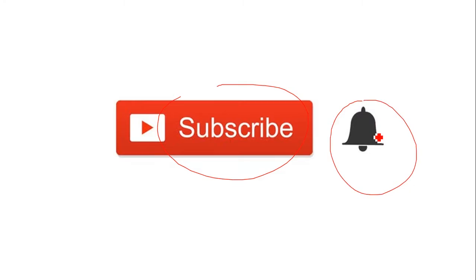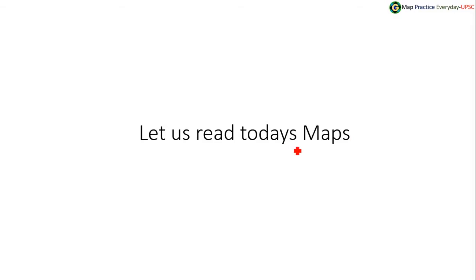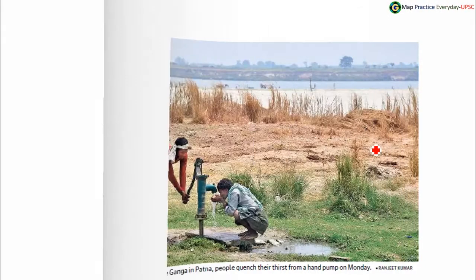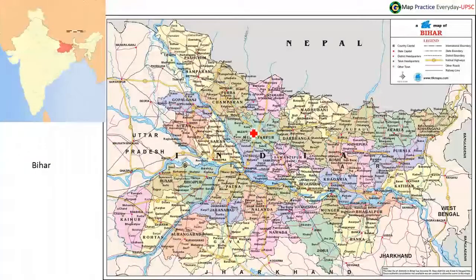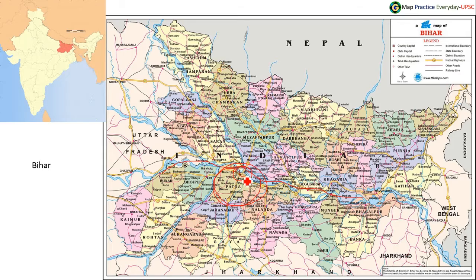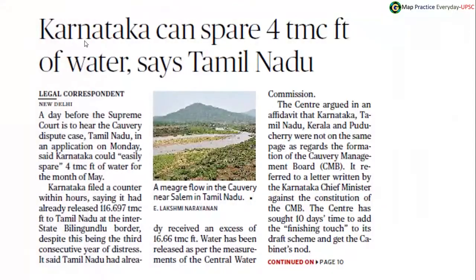This particular photo has been taken on the banks of Ganga in Patna. Patna is the capital city of Bihar. Patna is located here, and the Ganga River flows from west to east in Bihar. Patna is located on the banks of the Ganga River.